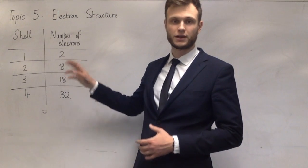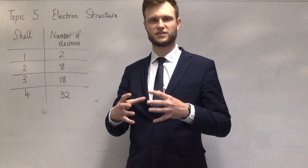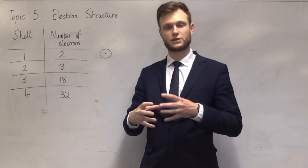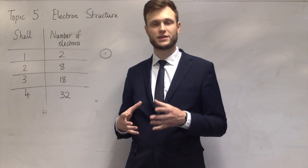The first shell has got two in it, and it's how you'd kind of expect it from GCSE. Those two electrons exist in a sphere around the nucleus, and so the electrons kind of whizz around in that sphere, wherever they want.